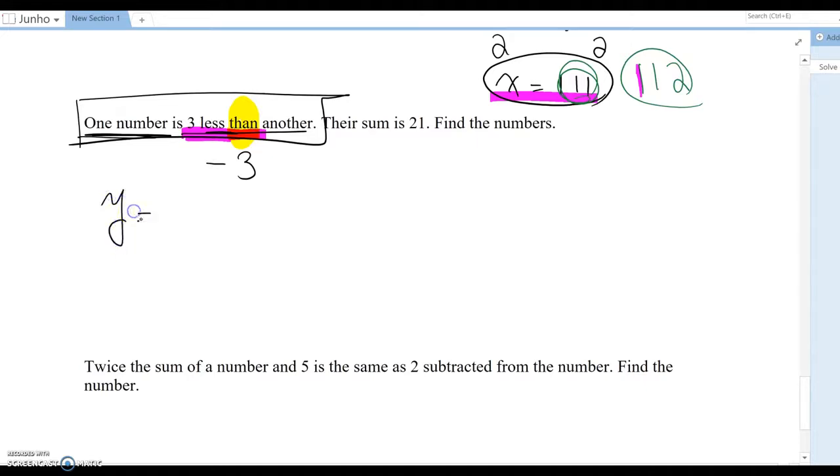is y equals three less than another, so x minus three. You may think, why not x equals y minus three? That's totally fine. I just feel like I'm going to set up y equals x minus three. Now the second part, their sum is 21. So I define two numbers, x and y.